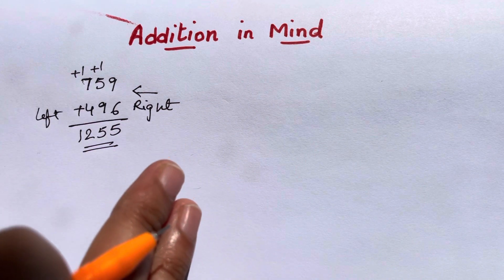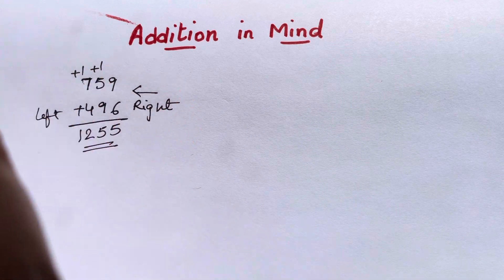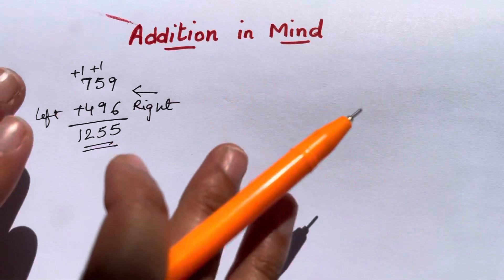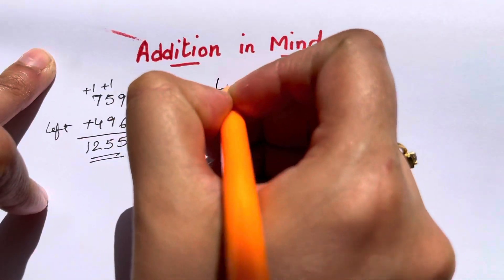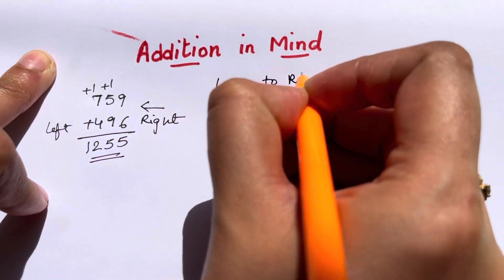But that complicates when you do it in mind, right? In mind you cannot go from right to left. Mind always goes from left to right. So all the genius mathematicians do additions or subtractions from left to right.